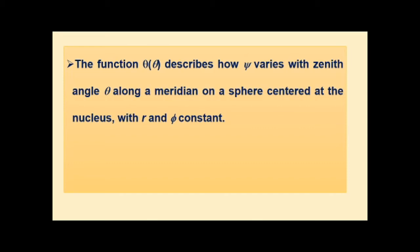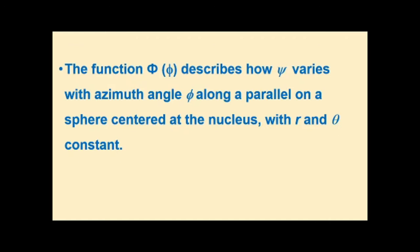For the function capital Theta, small r and small phi are constants, because capital Theta depends only on small theta. That small theta describes how the wave function varies with the zenith angle along a meridian on a sphere centered at the nucleus. The function capital Phi describes how the wave function psi varies with the azimuthal angle phi along a parallel on a sphere centered at the nucleus, with R and theta as constants.